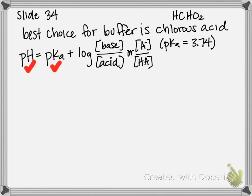So we can plug our pH, which is the desired pH of our buffer, 4.25 equals pKa, which for formic acid is 3.74, plus the log of our base over our acid.